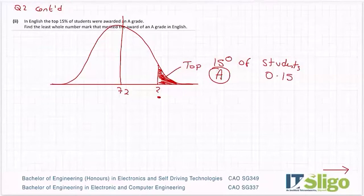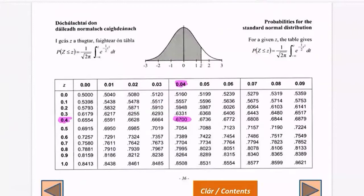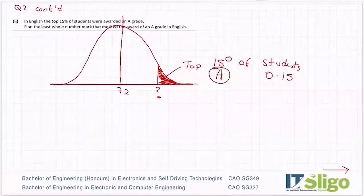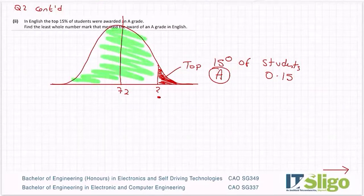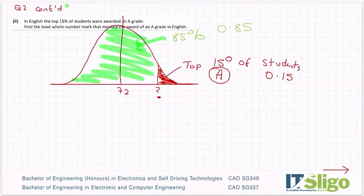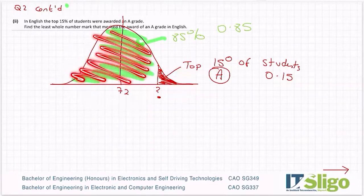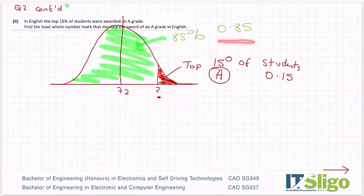So I'm wondering what grade equates to the top 15 percent. Let's write it down as a decimal. Now remember our normal distribution table, when we look up a value, we look up to the left of that line. So if I need 15 percent here, I need to have 85 percent down there, or 0.85.